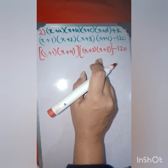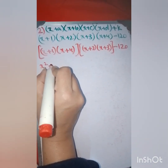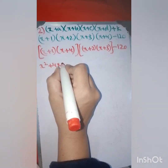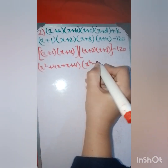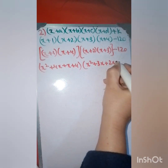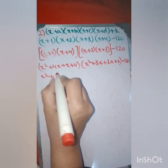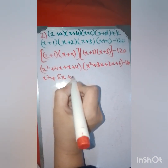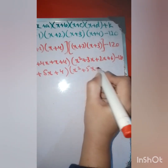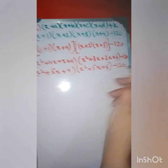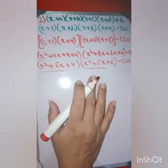Expanding (x+1)(x+4) gives x² + 5x + 4, and expanding (x+2)(x+3) gives x² + 5x + 6. So we now have (x² + 5x + 4)(x² + 5x + 6) minus 120. Notice that the first parts of these two expressions are identical — both contain x² + 5x.